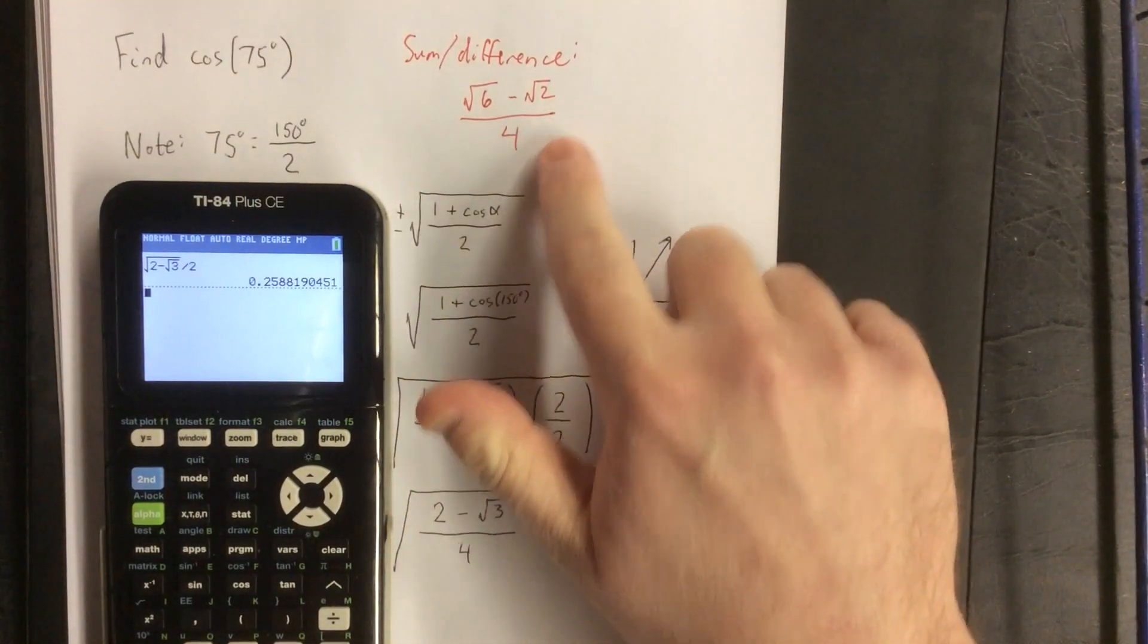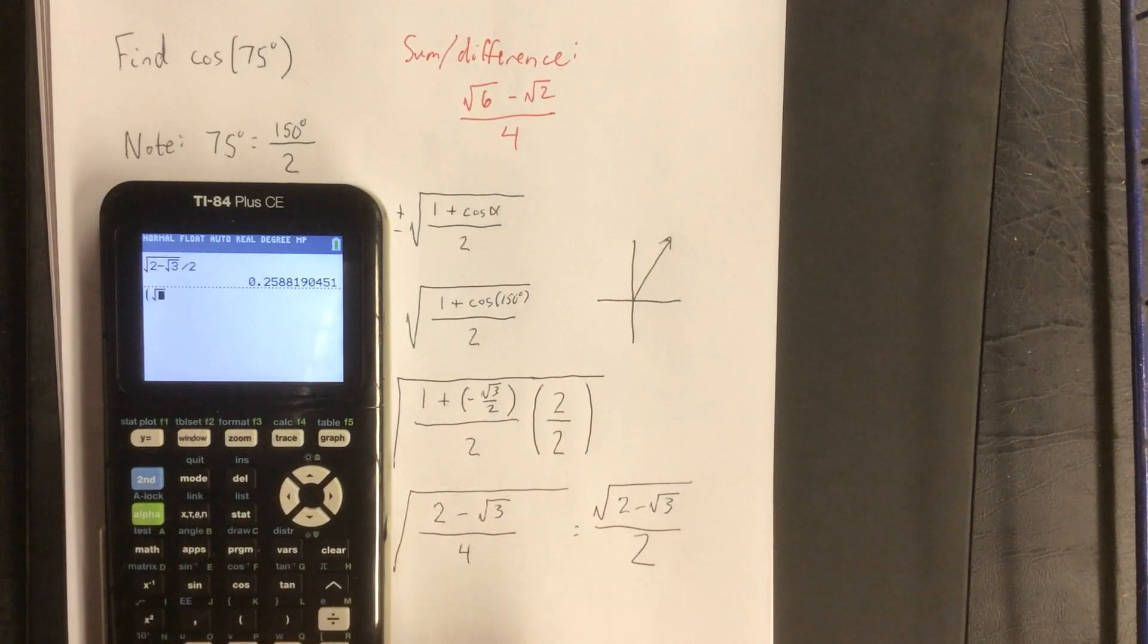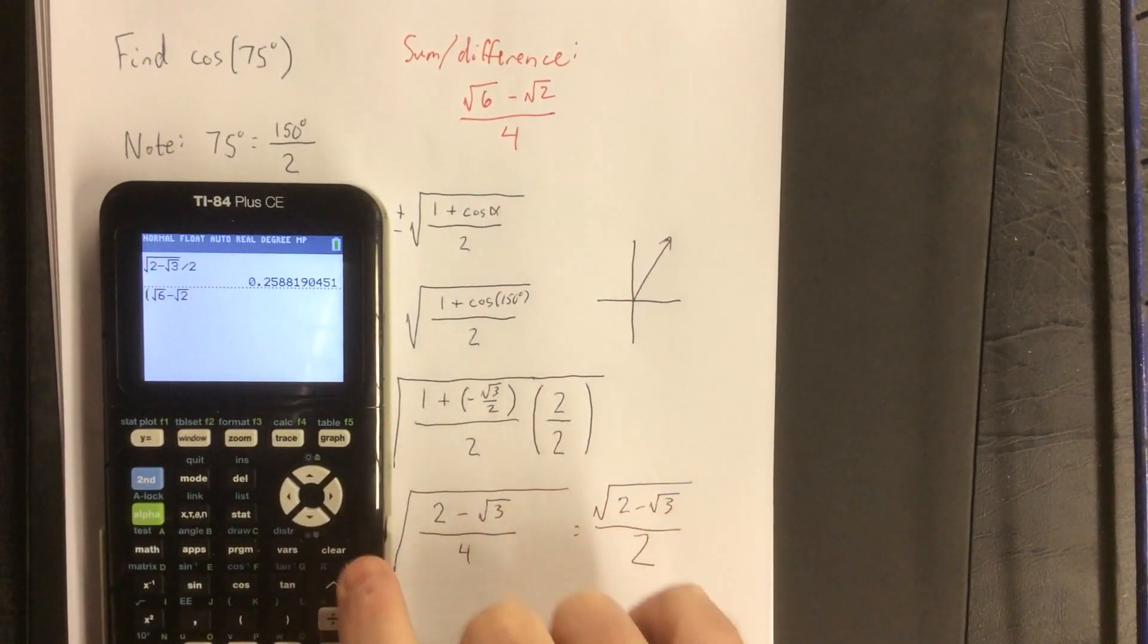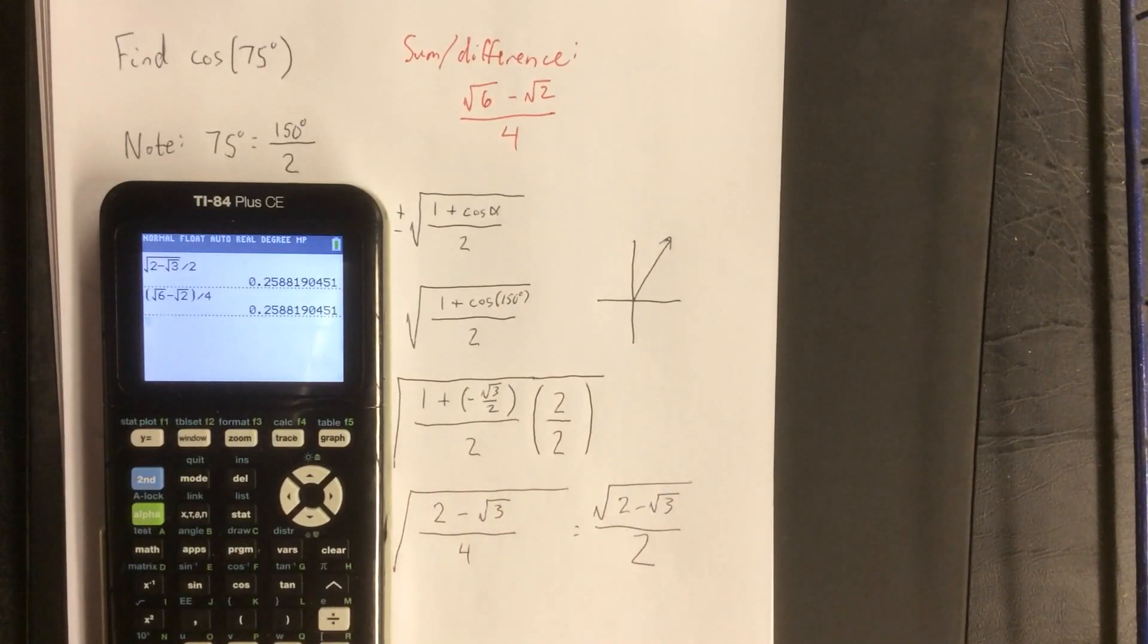Okay, and then let's try plugging this into the calculator. So a big set of parentheses for the whole numerator, all over 4. What do you know? They happen to be the same number. And in both cases, that is equal to the cosine of 75 degrees.